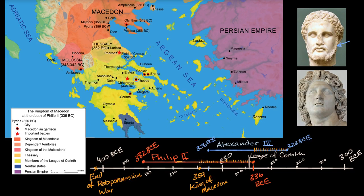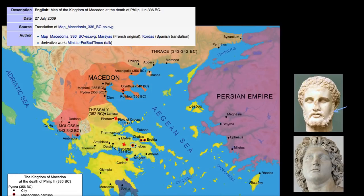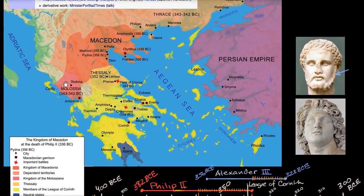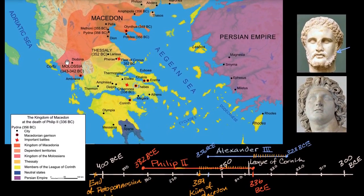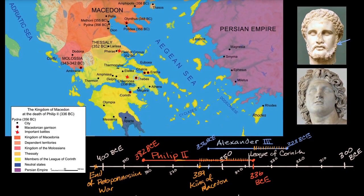What he then goes about doing is taking over most of the Greek city-states, and eventually he's able to unify most of them. You can see on this map from Wikipedia how he expanded his empire over time. In 359 BCE he becomes king of Macedon; in 352 he's moving into Thessaly; then in the 340s he's going into Thrace.